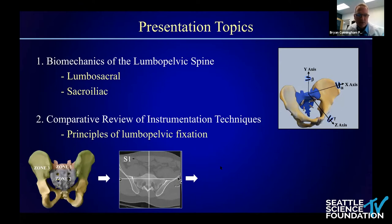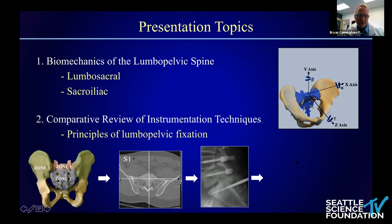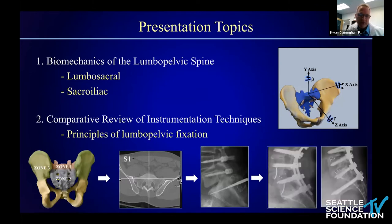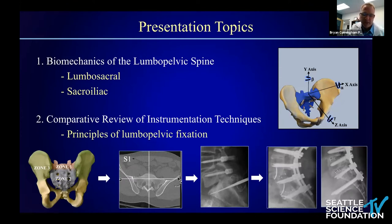The third area has to do with implant fixation — specifically screw orientation, screw dimensions including length and diameter, and whether cortical purchase is obtained. Finally, we'll look at implant kinematics, incorporating the instrumentation with the longitudinal member and how various fixation methods across zones one, two, and three influence the overall kinematic properties of the reconstruction.